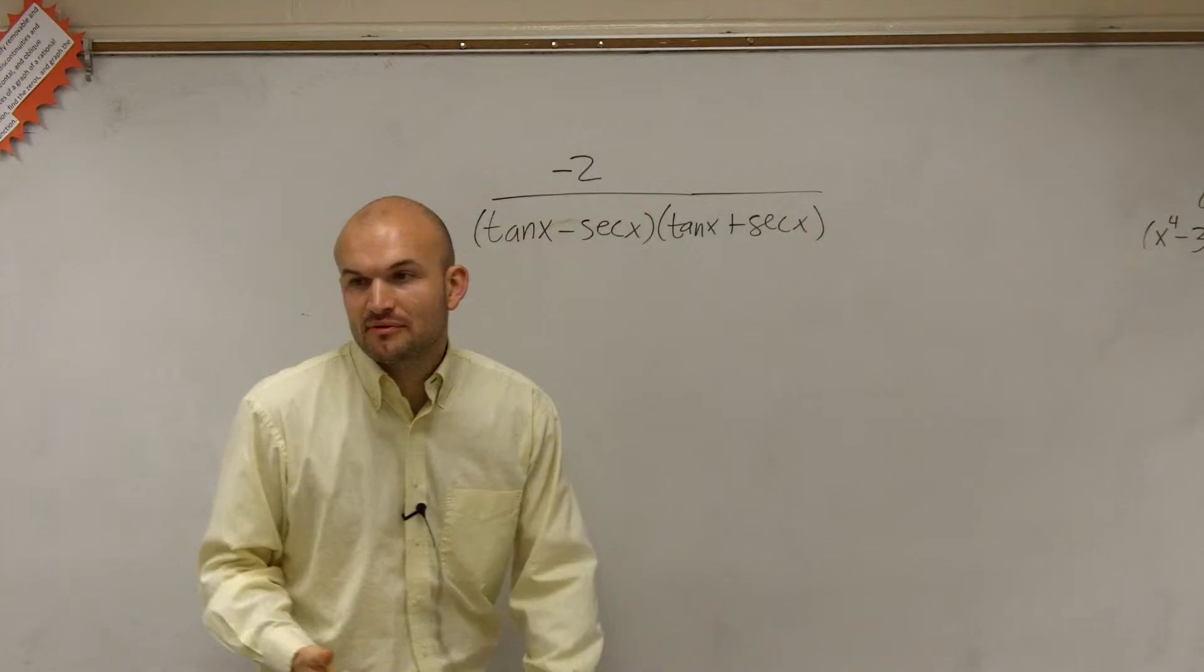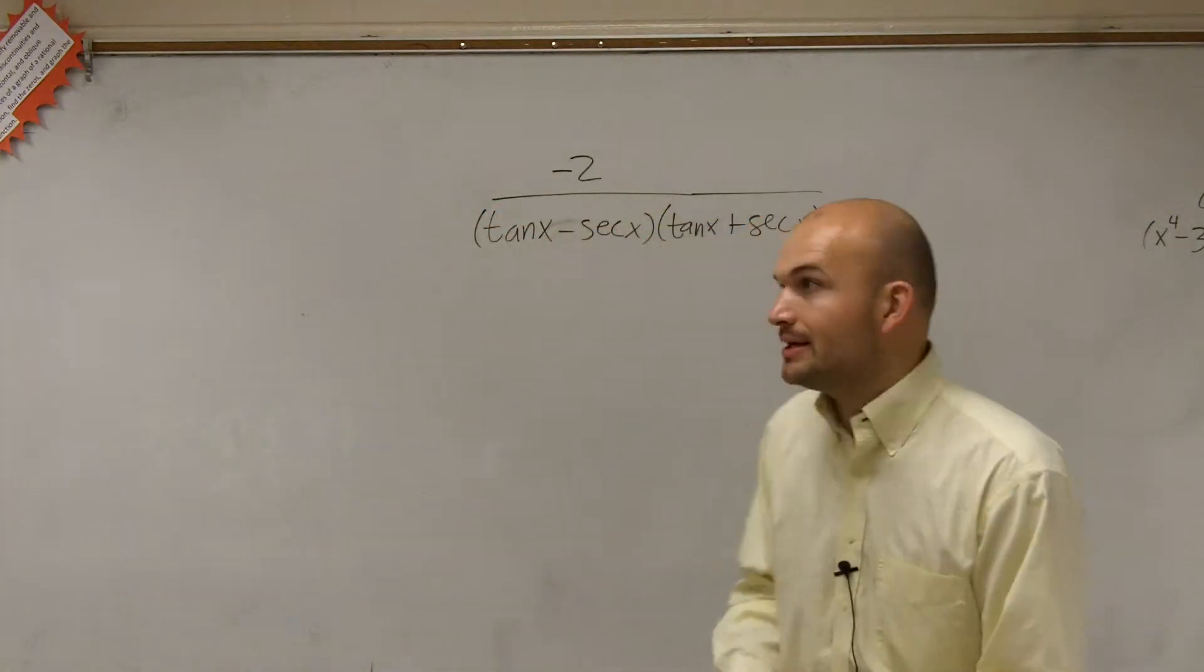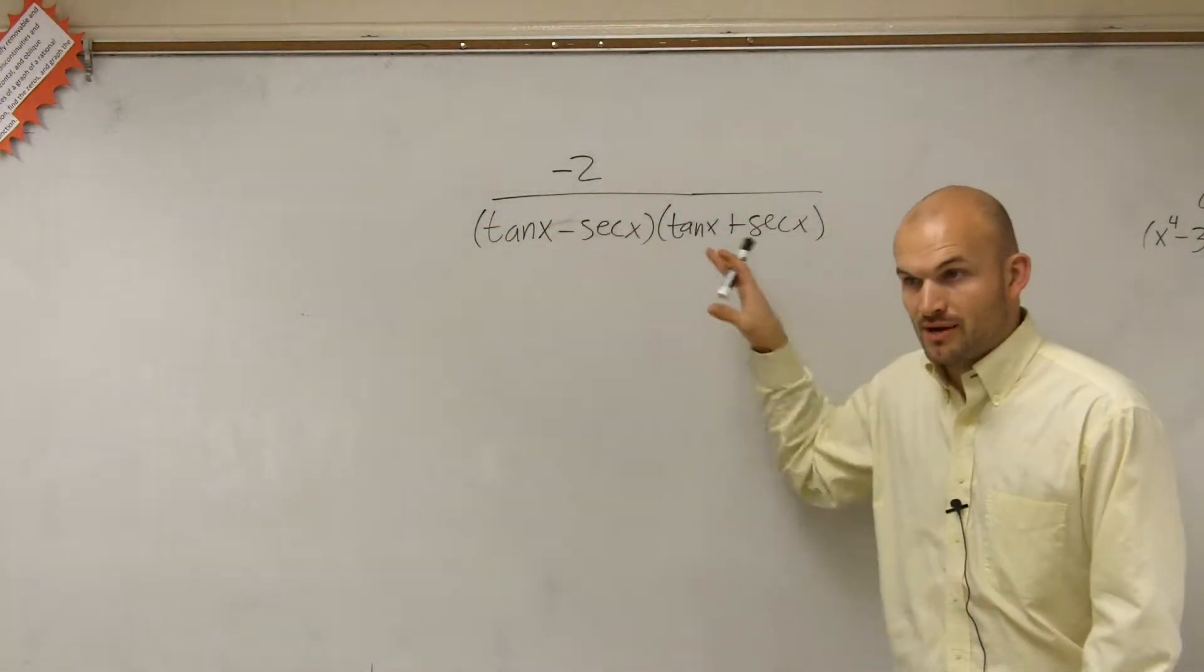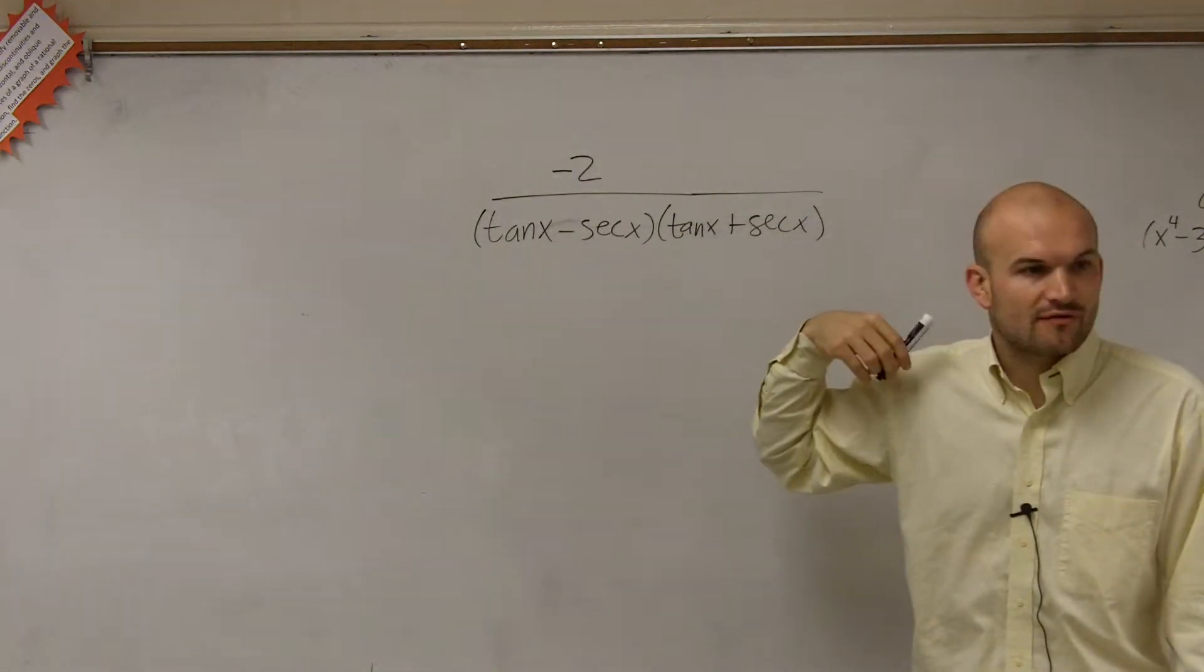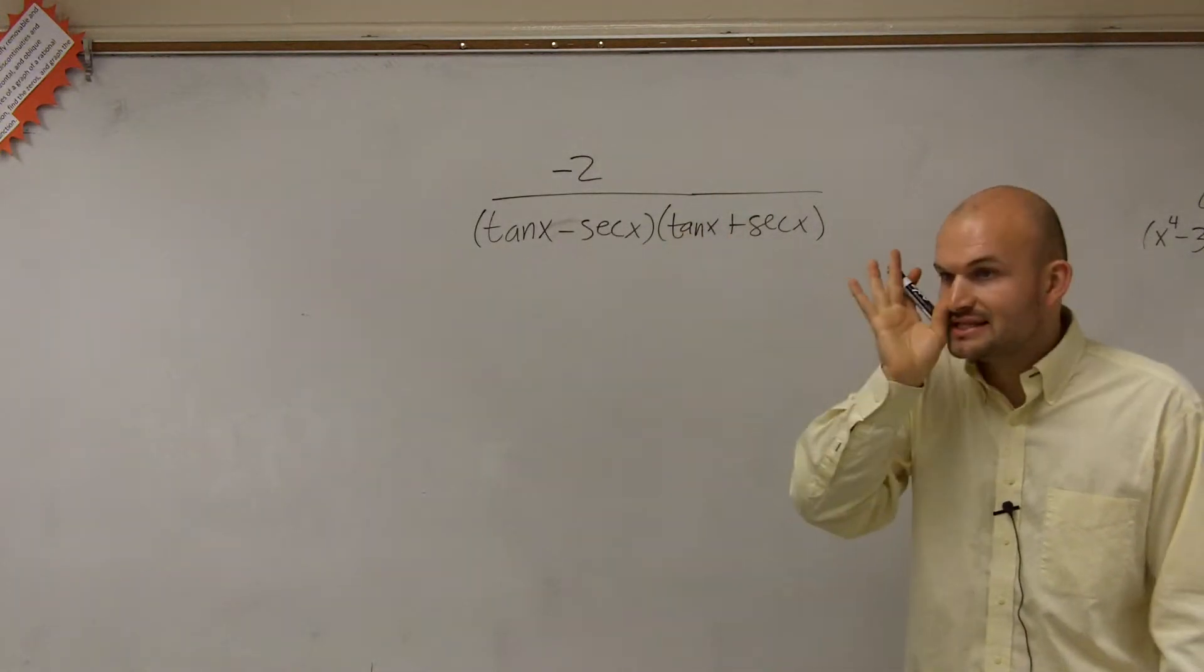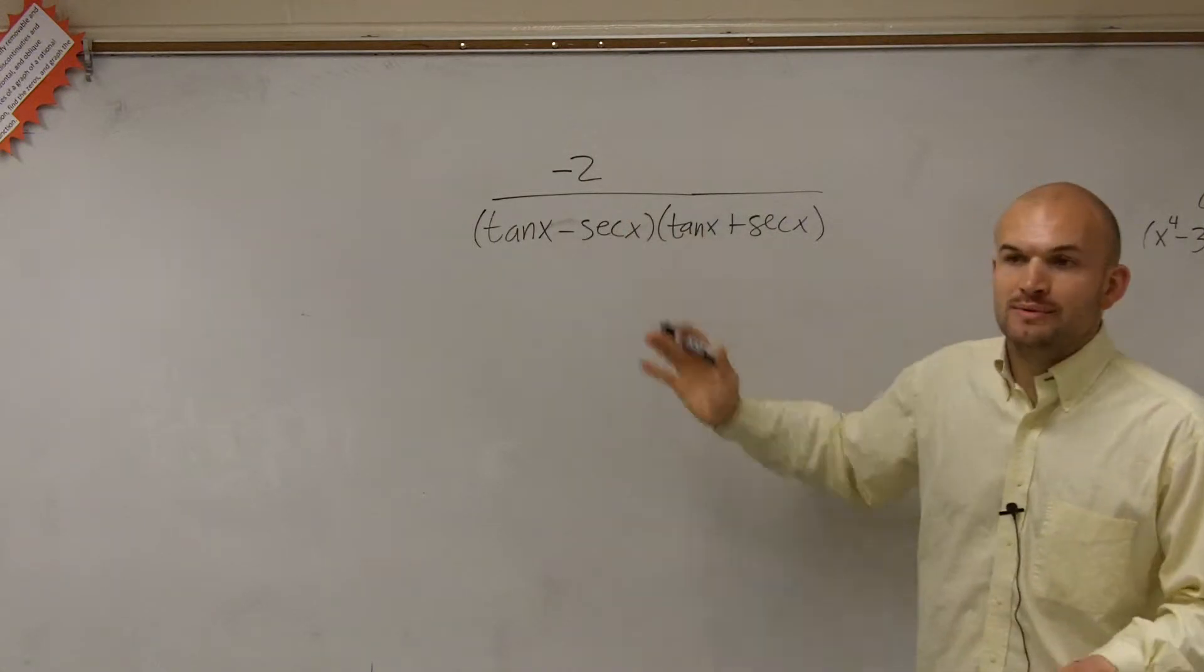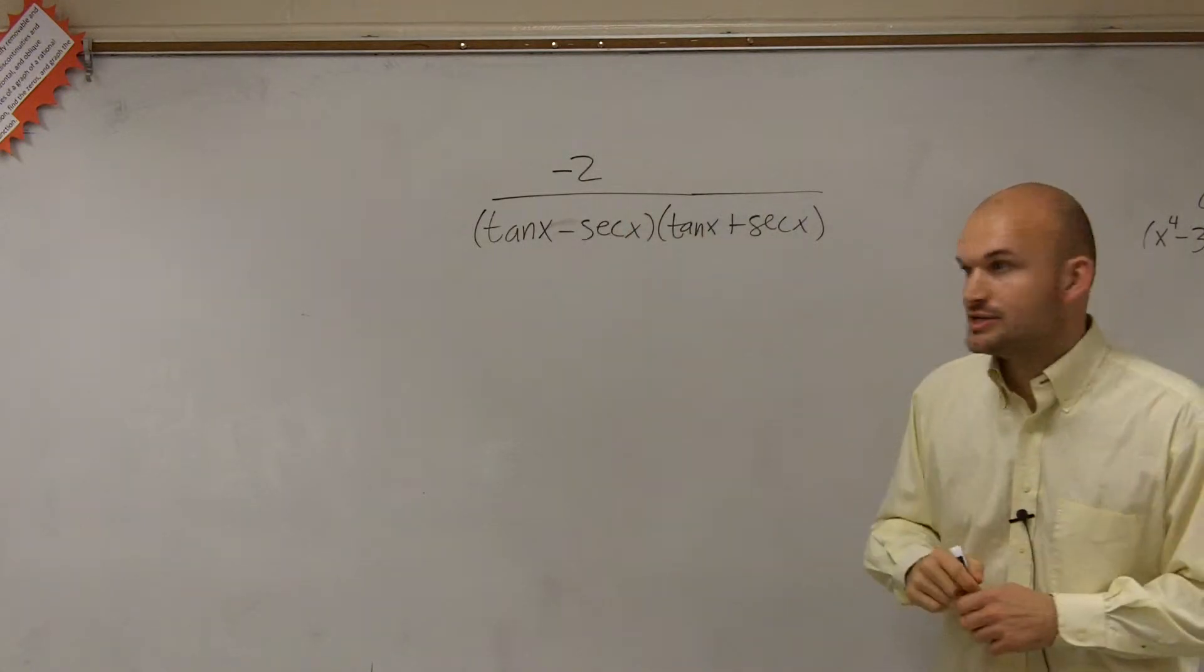Well, first of all, guys, just think about simplifying this. We have a multiplication problem we can do on our denominator. And then, obviously, we want to try to get rid of our fractions. So we want to try to get this at least as a monomial denominator. Right now, we have a multiplication. So let's go ahead and provide multiplication first.